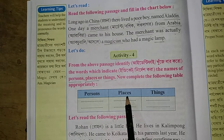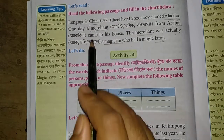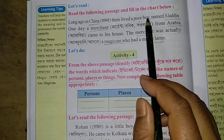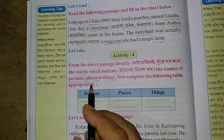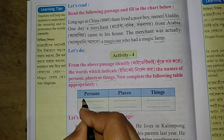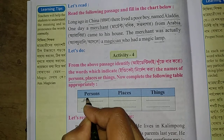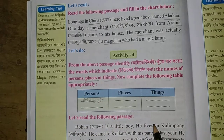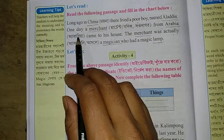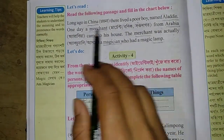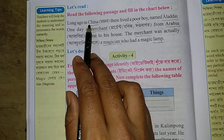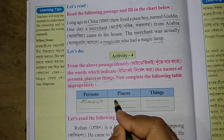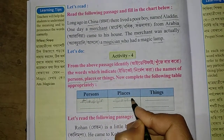Now complete the following tables. Persons, places, things. Long ago in China there lived a poor boy named Aladdin — Aladdin is a person, so we write Aladdin: A-L-A-D-D-I-N. Next, China — long ago in China — China is a place: C-H-I-N-A.